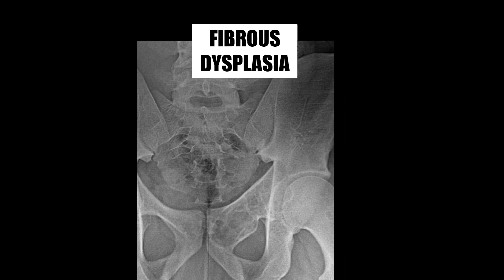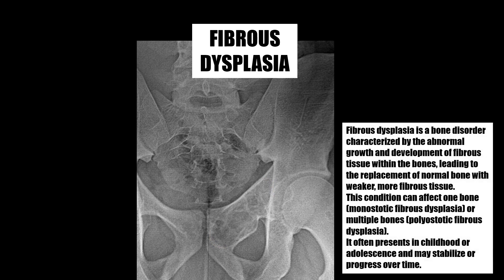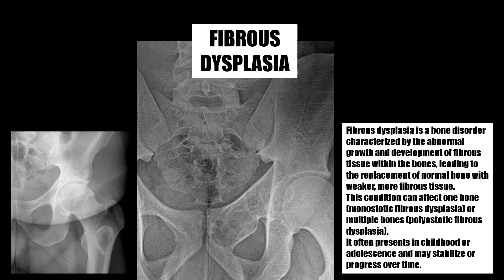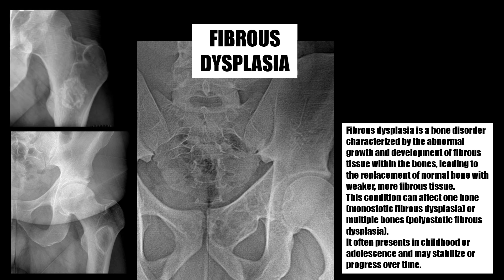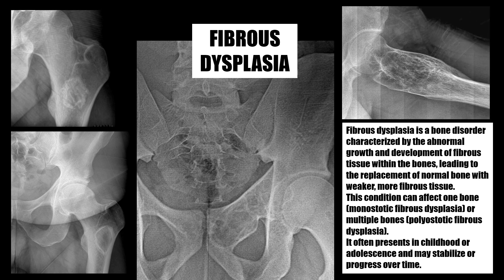Case number nine: this expansile soap bubbly lesion in the superior pubic rami represents fibrous dysplasia. Fibrous dysplasia is a bone disorder characterized by the abnormal growth and development of fibrous tissue within the bones, leading to the replacement of normal bone with weaker, more fibrous tissue. This condition can affect one bone (monostotic) or multiple bones (polyostotic), and it often presents in childhood or adolescence and may stabilize or progress over time.